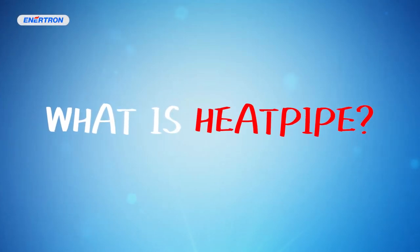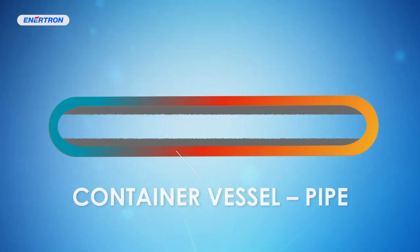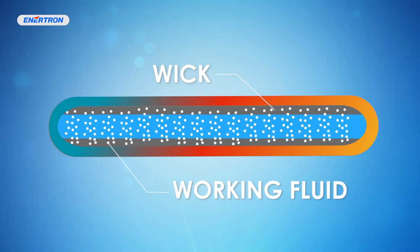What is heat pipe? Heat pipe is a heat superconductor. Heat pipes consist of a container vessel, typically a pipe, wick structure, and a working fluid.